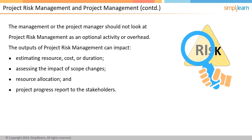On the other hand, some of the outputs of other project management processes — such as work breakdown structure (WBS), estimation of schedule and cost, and assumptions — are important prerequisites for project risk management. Let us first discuss how we can make the risk management process effective.